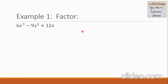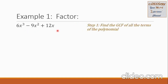Let's have example 1: factor the trinomial 6x cubed minus 9x squared plus 12x. Our step 1 says find the GCF of all the terms of the polynomial. In here, the GCF is 3x.